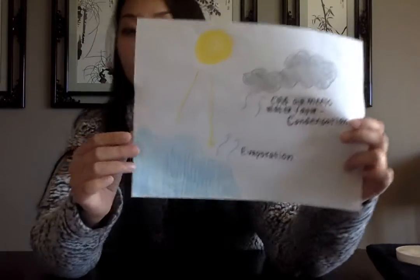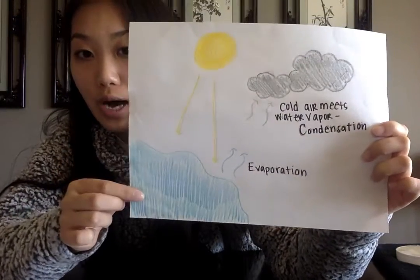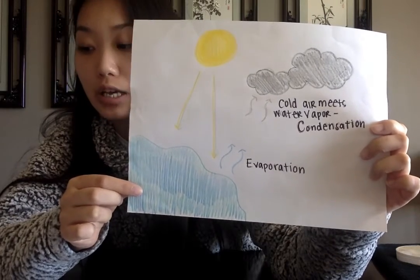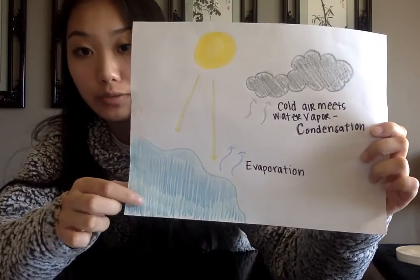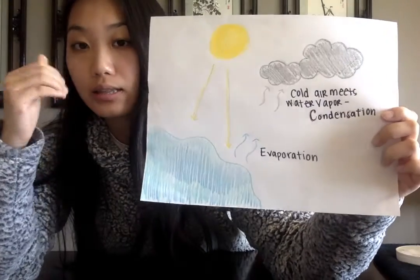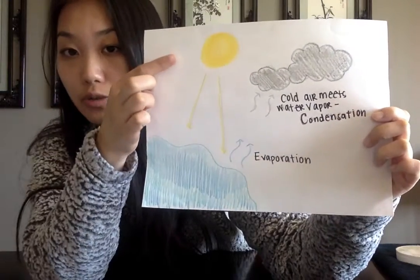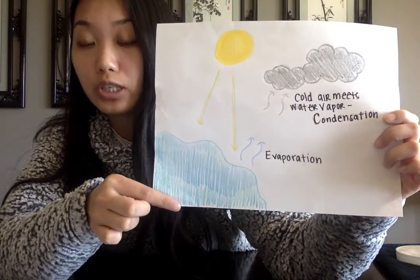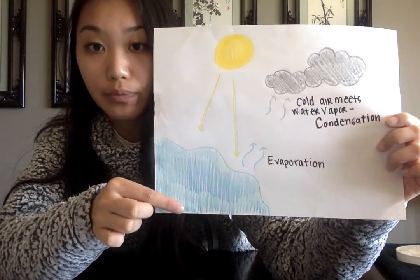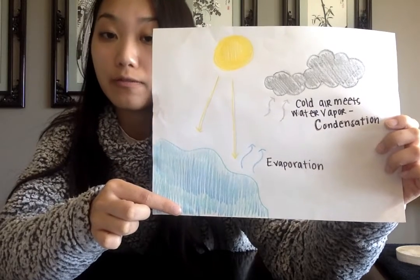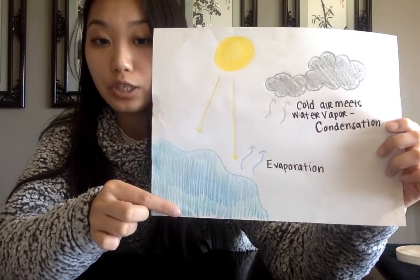The first thing that happens is we have a body of water. A body of water could be anything from an ocean, a lake, a river — anything really that has water inside. What happens is that the sun is going to heat this body of water and the water is going to turn into water vapor. This process of turning water into water vapor is called evaporation.